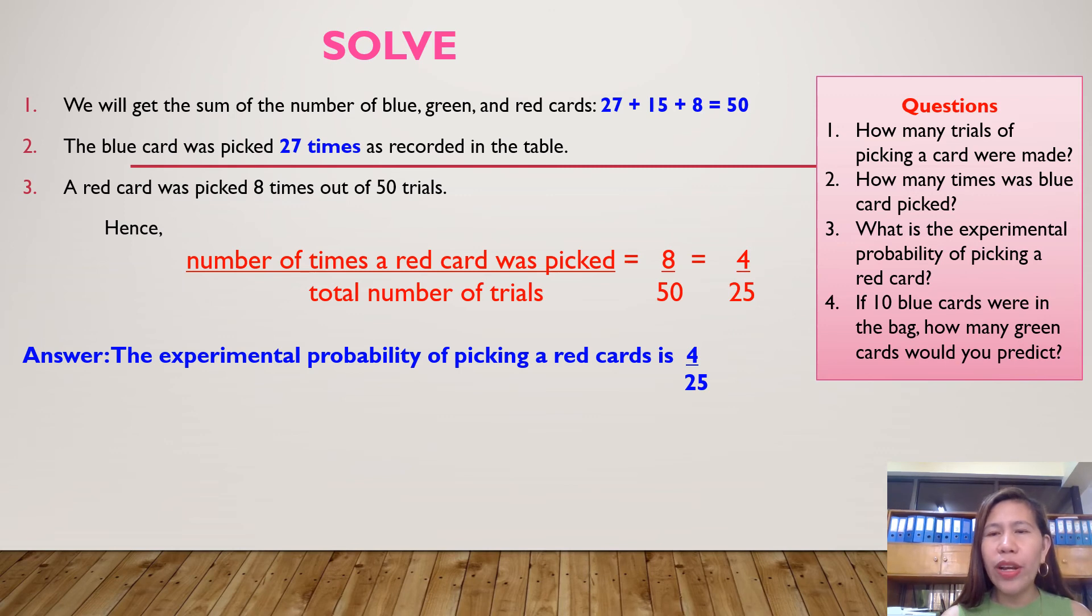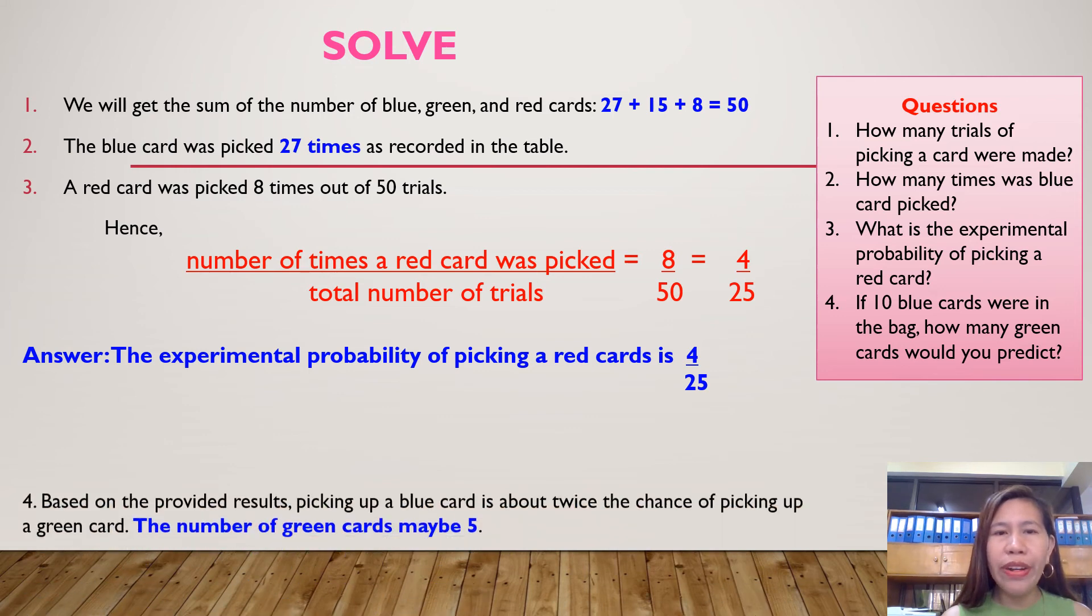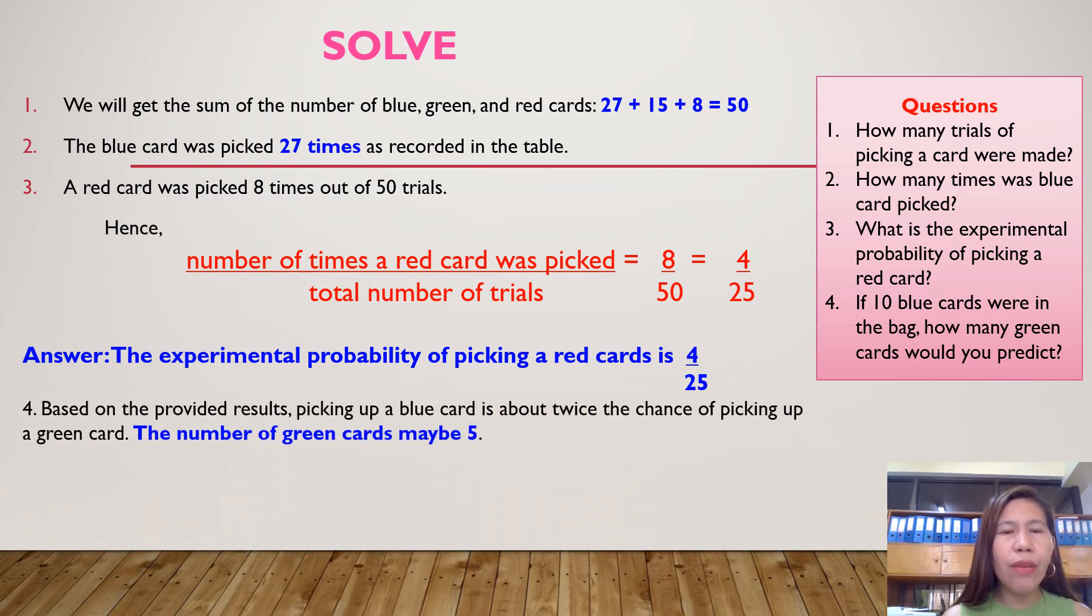The next question, the last question. If 10 blue cards were in the bag, how many green cards would you predict? Based on the provided results, picking up a blue card is about twice the chance of picking up a green card. So, the answer is, the number of green cards may be 5, half of the blue card.